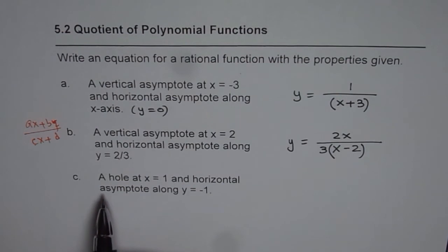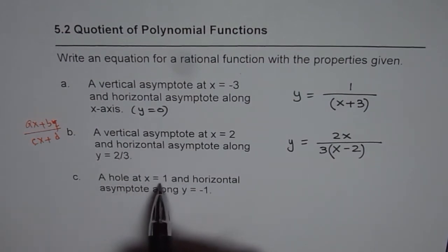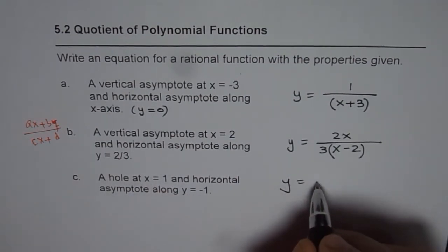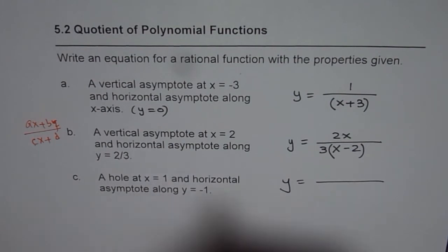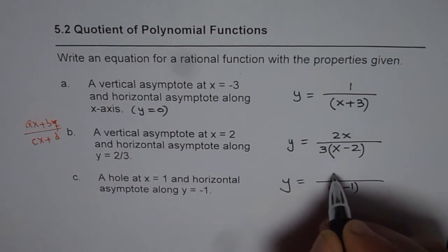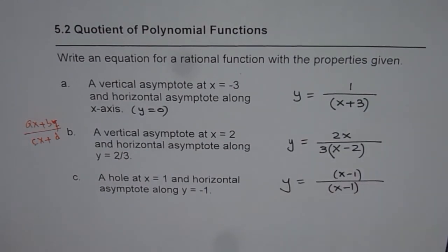Next one. A hole at x equals 1 and horizontal asymptote along y equals minus 1. So let's take care of the hole first, which is at x equals 1. That means we are looking for a common factor, x minus 1 in both numerator and denominator. When that cancels, you get a hole.